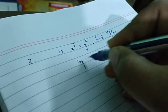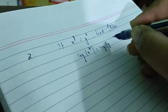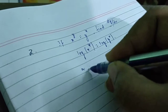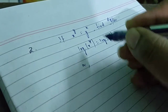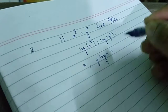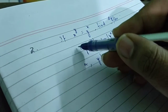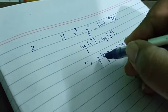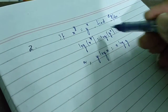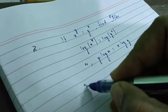Without wasting time, let us take log on both sides. So it will be log of x power y equals log of y power x. Now with the third property of logarithm, it will become y into log x on the left side, and x into log y on the right side, because the exponent comes in front as a multiplier.